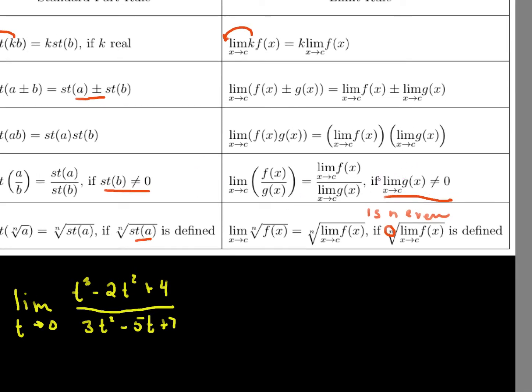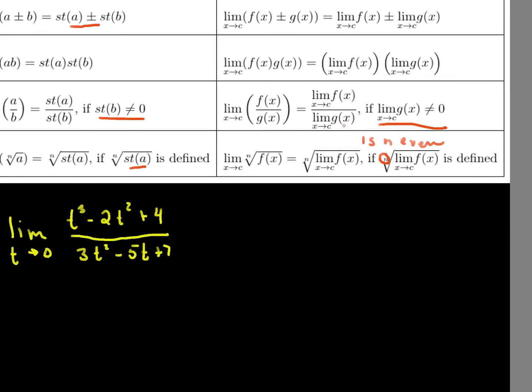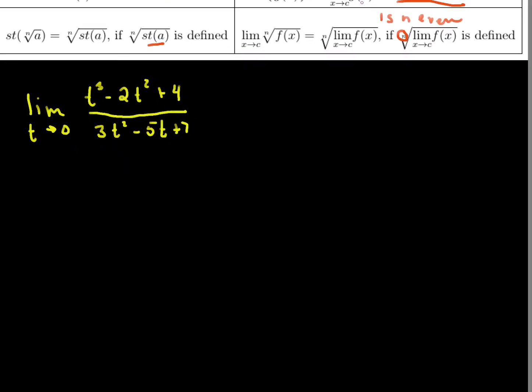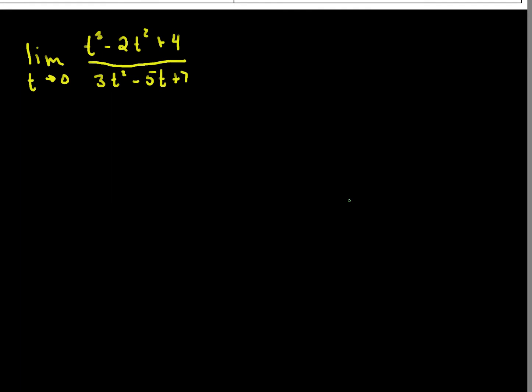We know that, provided that the limit of the denominator isn't 0, the limit of the ratio is the ratio of the limits.